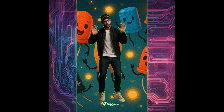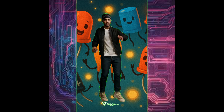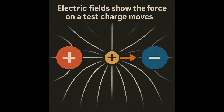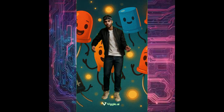Yo, everything begins with a charge, positive or neg, like charges repel, opposites check. Electric fields show the force on a test charge — field lines spread out from moving into groups. The closer the lines, the stronger the force, inverse square law on its natural course. Static sparks jump when electrons flee, that's the start of all electricity. Flow like electrons along the wire.